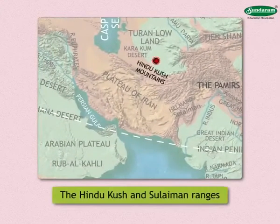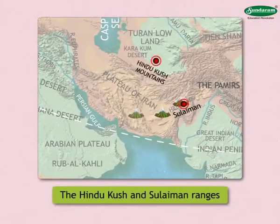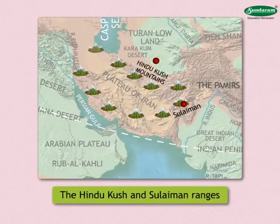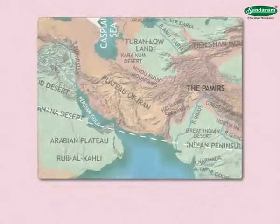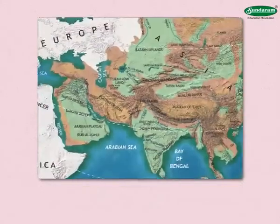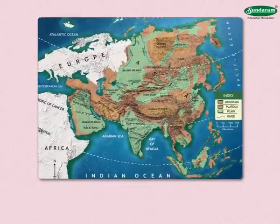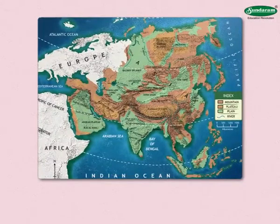The Hindu Kush and Suleiman ranges, spreading to the west of the Pamirs, stretch up to Turkey and are known by different names there. Find out about the other mountain ranges by looking at the figure.